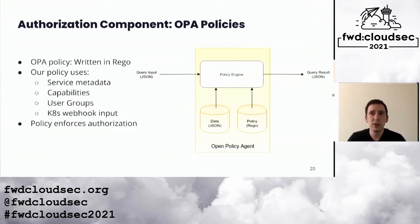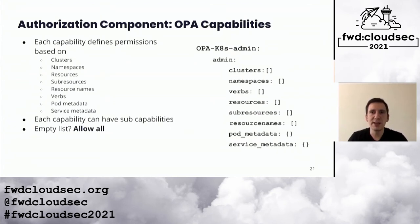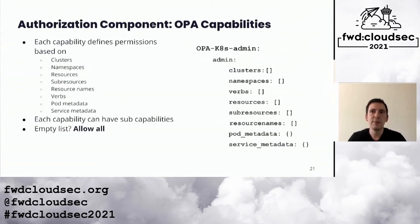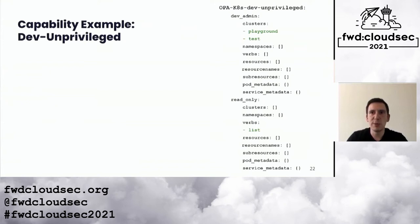The OPA policy is the logic that OPA uses to take all the provided data and make a decision. It is written in Rego, a language based on Datalog. The capability format contains a number of different ways to limit access — it currently contains clusters, namespaces, resources, subresources, resource names, verbs, pod metadata, and service metadata, which are all native Kubernetes attributes except for the service metadata. A capability can have any number of sub-capabilities, and these attributes are all structured as allow-lists where an empty list means allow all.